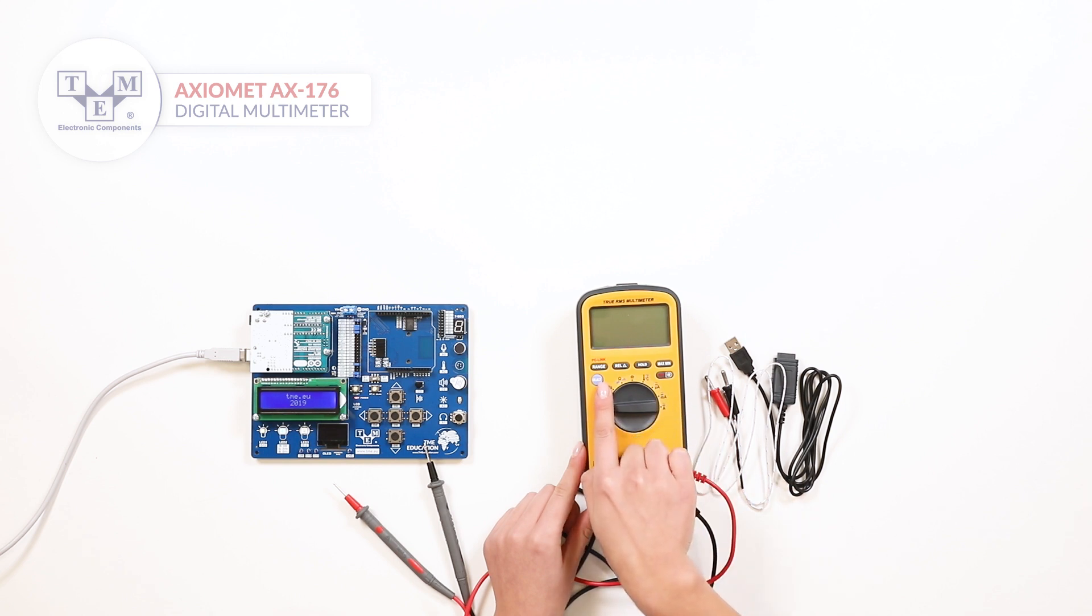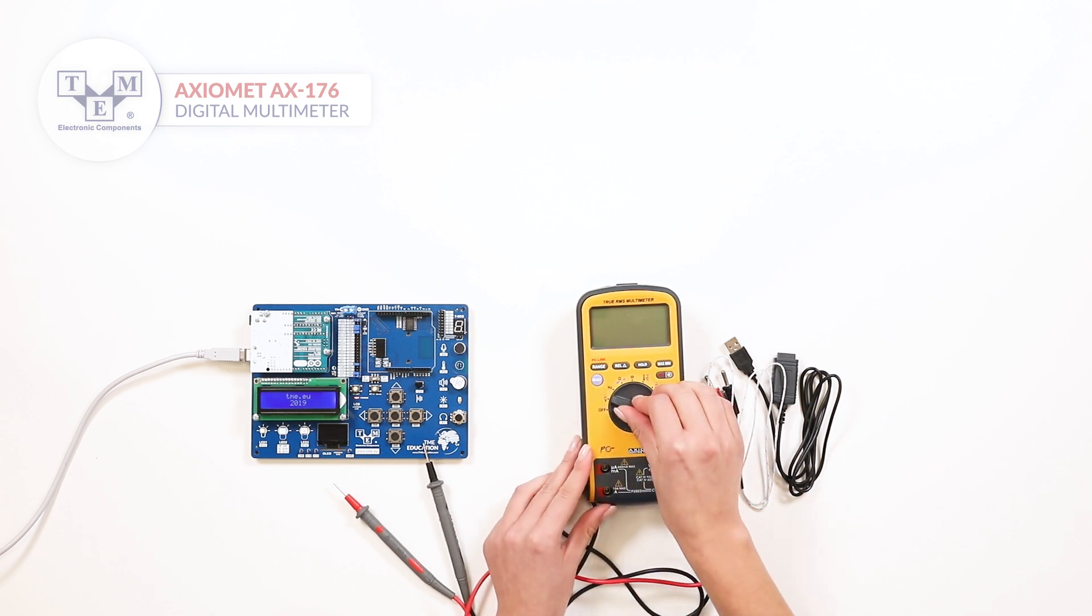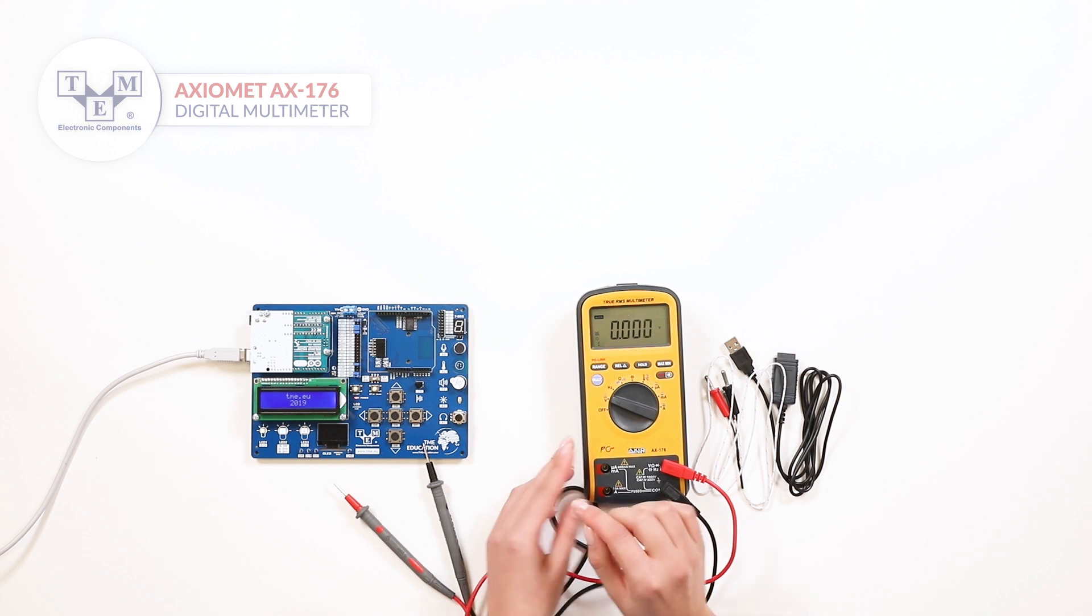The meter has a big 6,600-count LCD display with backlight, a bar graph, and sampling speed of 3 times per second.